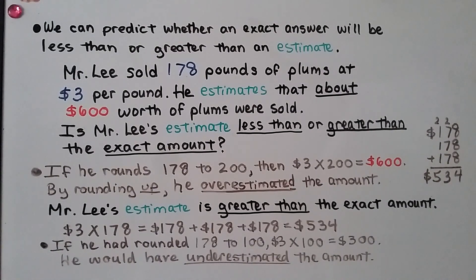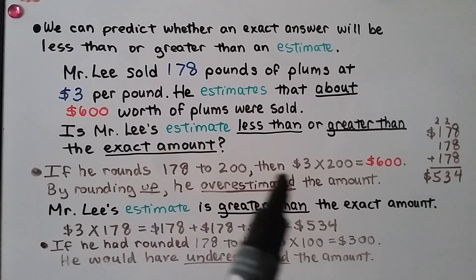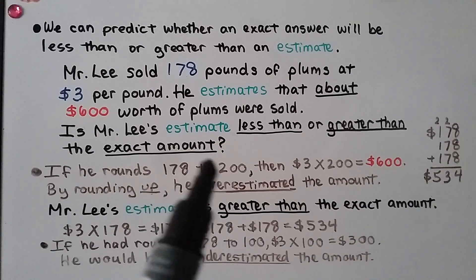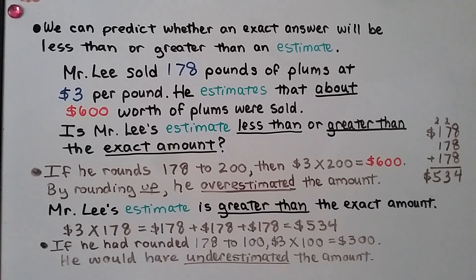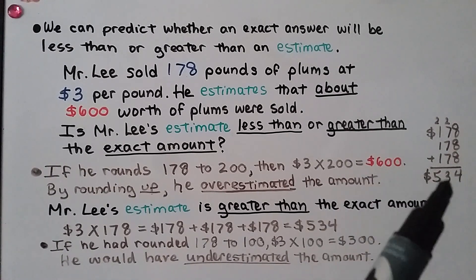We can predict whether an exact answer will be less than or greater than an estimate. Mr. Lee sold 178 pounds of plums at $3 per pound and estimates about $600 worth of plums were sold. If he rounds 178 to 200, then $3 times 200 equals $600. But by rounding up — since 200 is more than 178 — he overestimated. Mr. Lee's estimate is greater than the exact amount. Adding $178 three times gives $534, confirming that $600 is an overestimate.